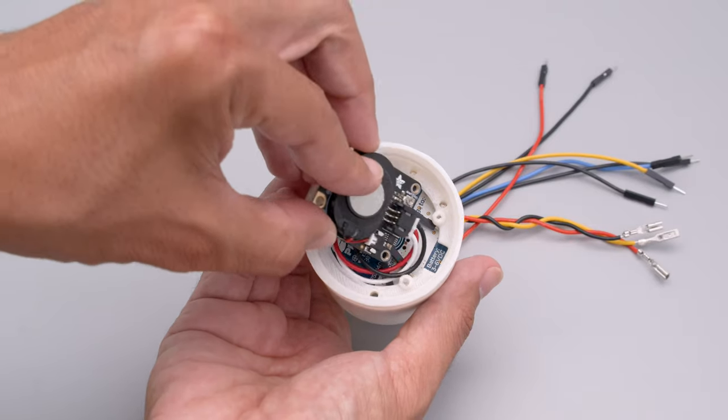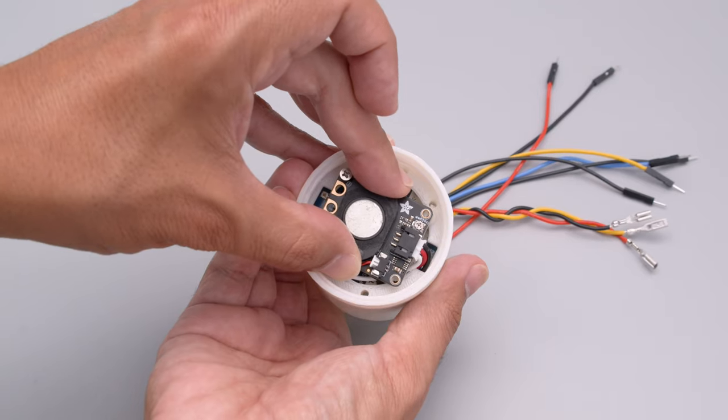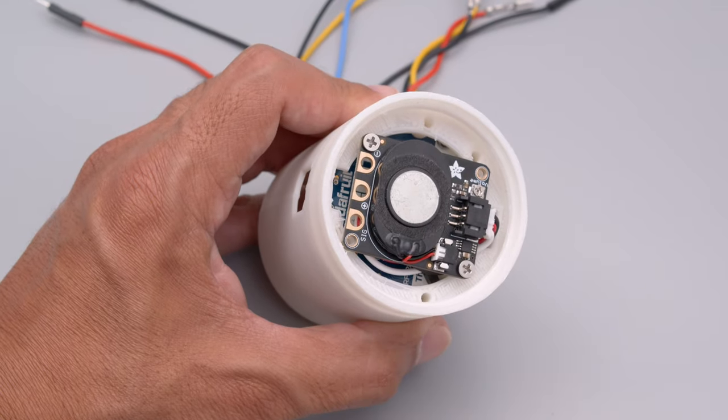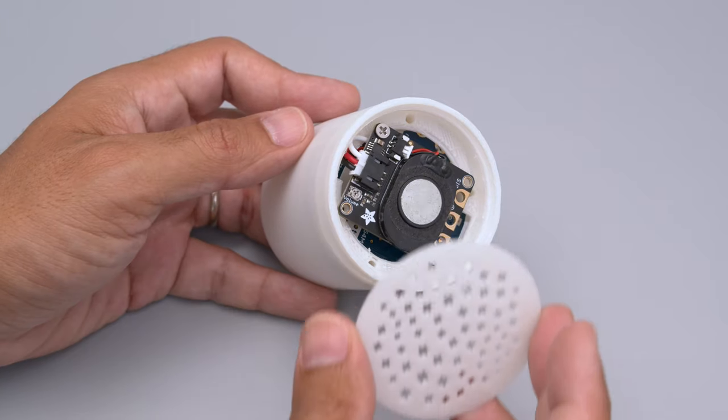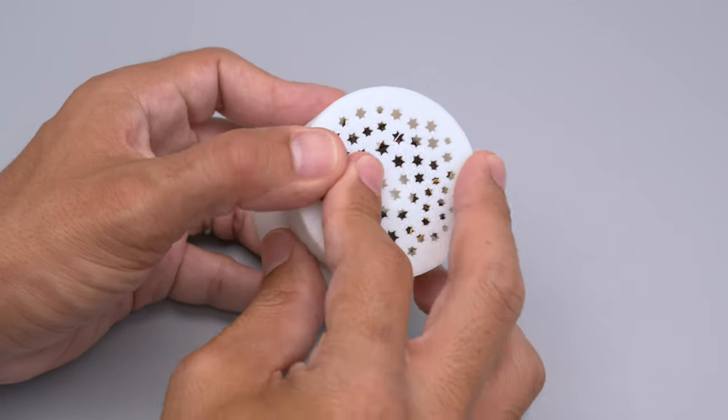To boost up the sound a Stemma speaker is mounted under the case. Additional screws secure the speaker to the bottom of the enclosure. This bottom cover has a speaker grille and snap fits under the case.